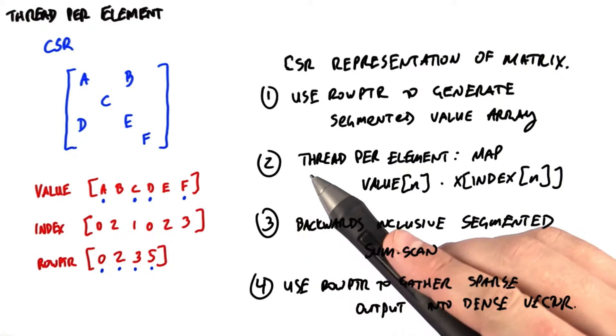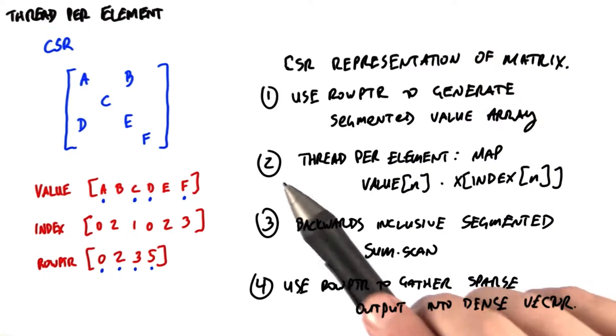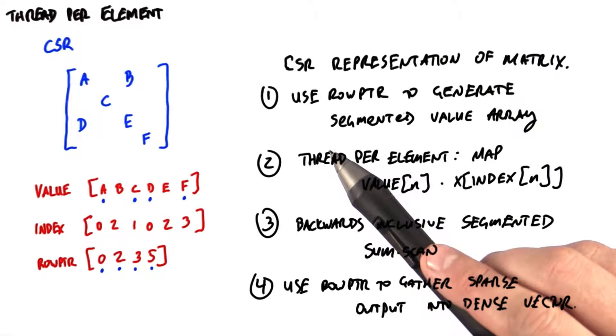If you'll recall, the approach that we pursued in unit 4 was to assign a thread to each element, do one multiplication per element, then use a backwards inclusive segmented sum scan to add up the partial products and generate a result per row.